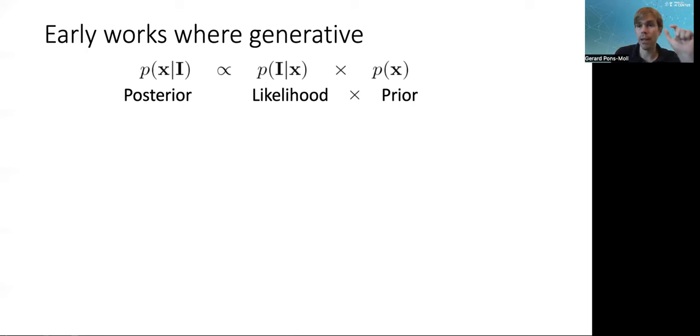What you typically do is you maximize the likelihood times the prior. To maximize the likelihood you have to find those parameters x that make the observations as likely as possible. To maximize the prior, you want parameters x that are within the space of valid poses, for example, the space of valid shapes. This you can learn before you see any visual observations.